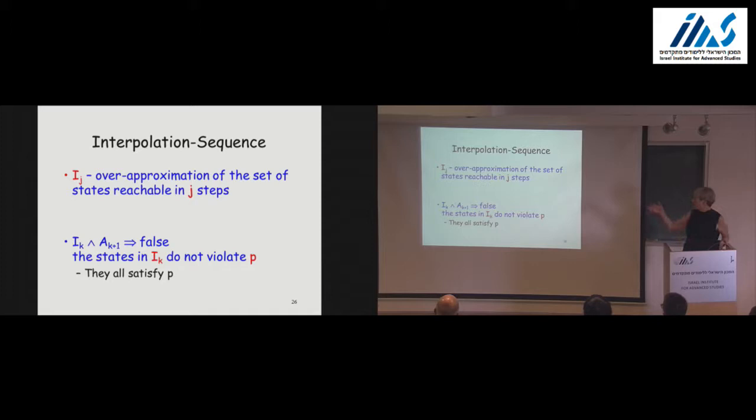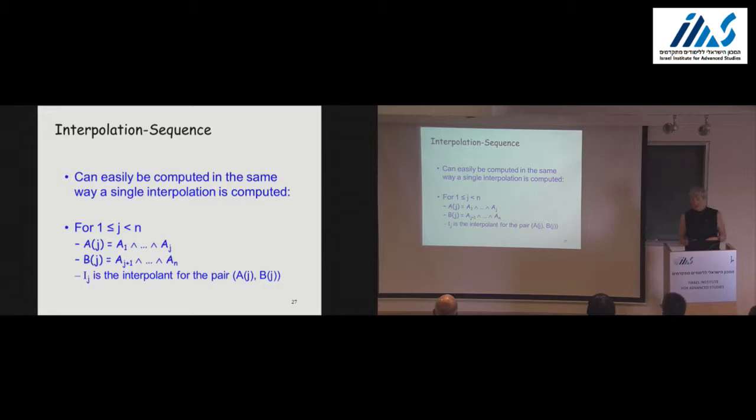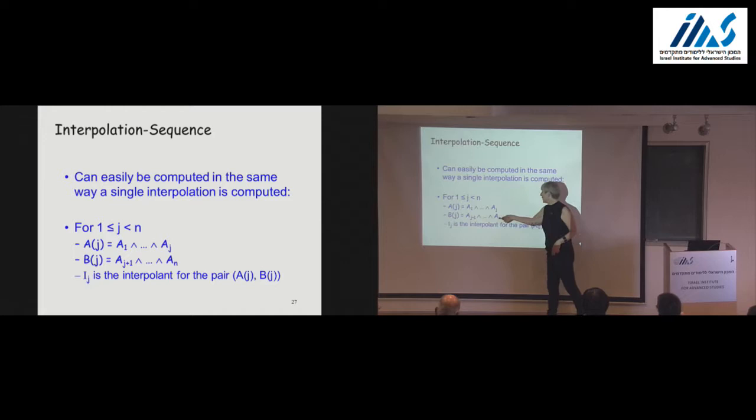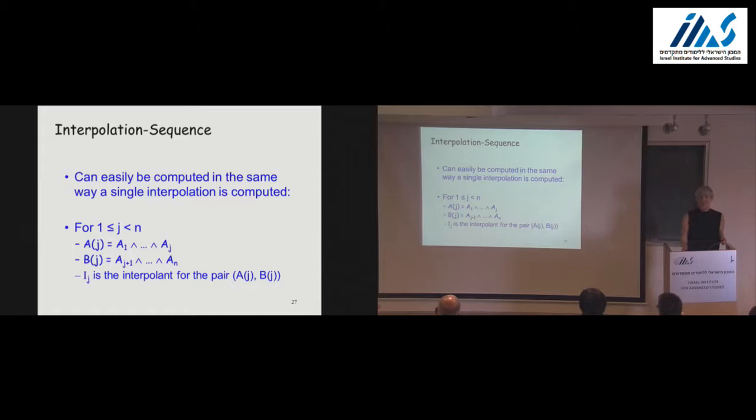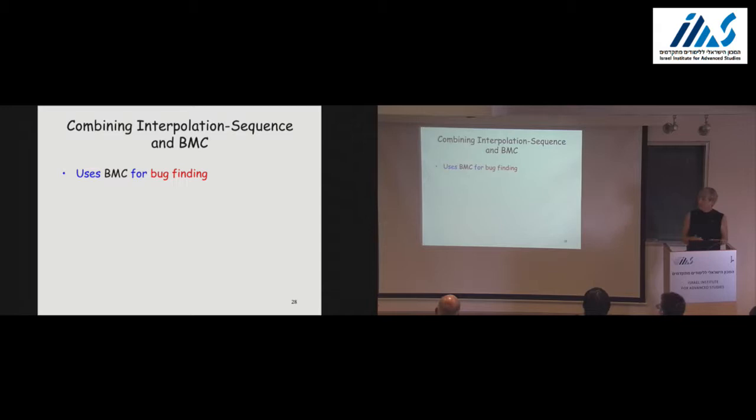This summarizes the interpolation sequence approach. To compute an interpolation sequence, we take the formula, partition it into A₁ through A_N, and compute all interpolants simultaneously from the same resolution proof. This doesn't add significant complexity compared to computing a single interpolant.